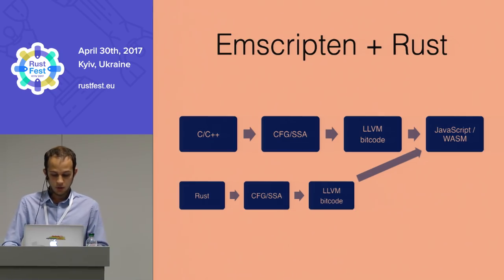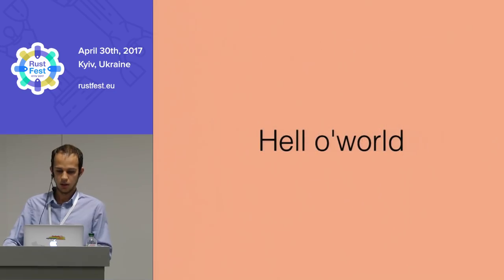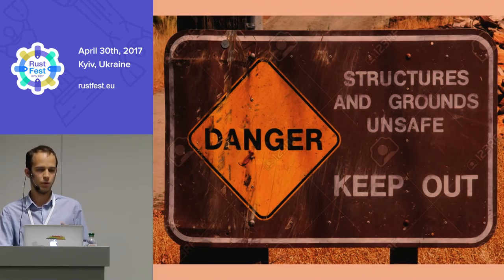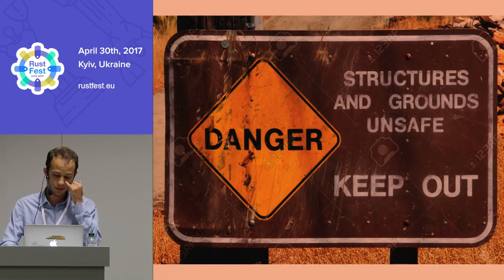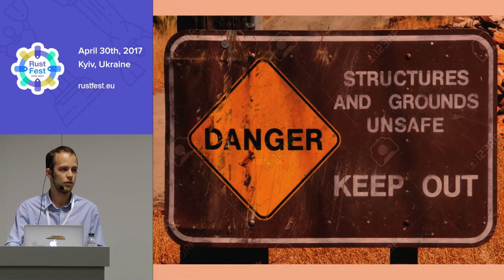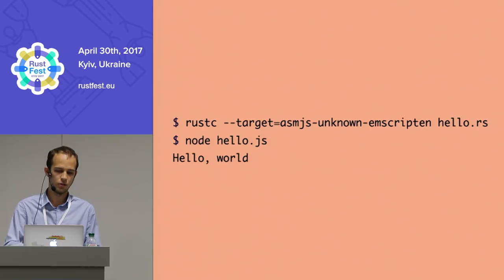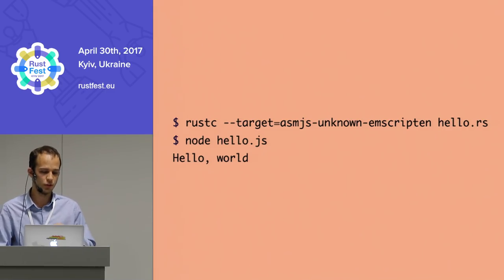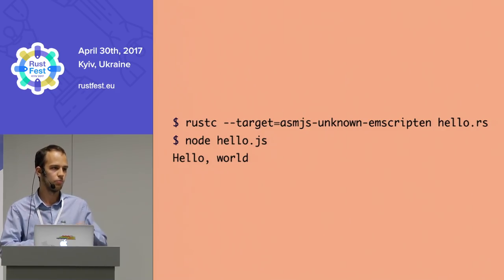So how do you get started with Rust in JavaScript? Let's write a simple Hello World - just a warning, there will be lots of unsafe stuff. Nowadays it's quite easy because asm.js is a native target in Rust itself. You can literally write fn main with println and hello world and compile it using rustc --target asm.js-unknown-emscripten, or for WebAssembly wasm32-unknown-emscripten, and just run it with Node or include it in the browser.